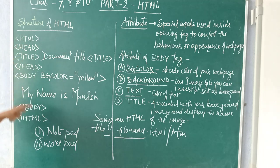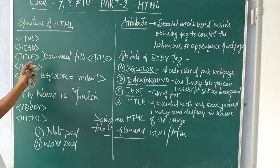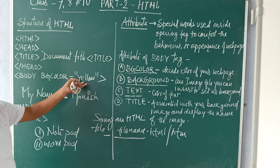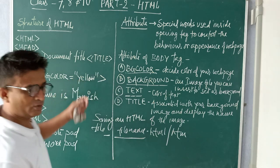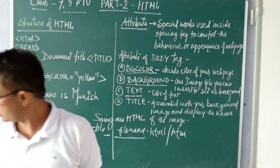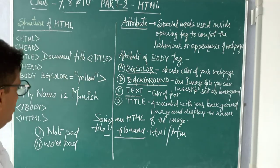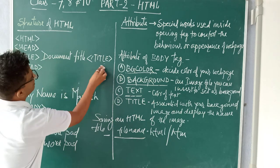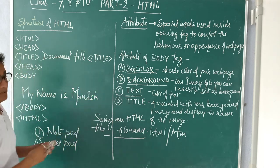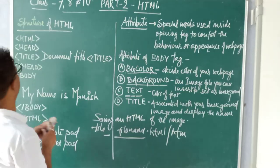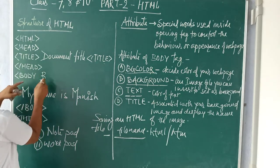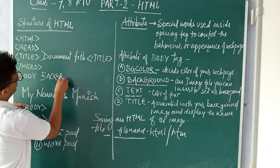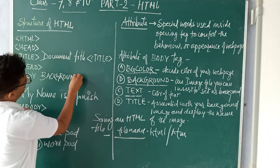This is your first website that you have created. You can put your name, you can put green or whatever color you want. Now coming on to how to use the background attribute — you will type inside the body tag: background.